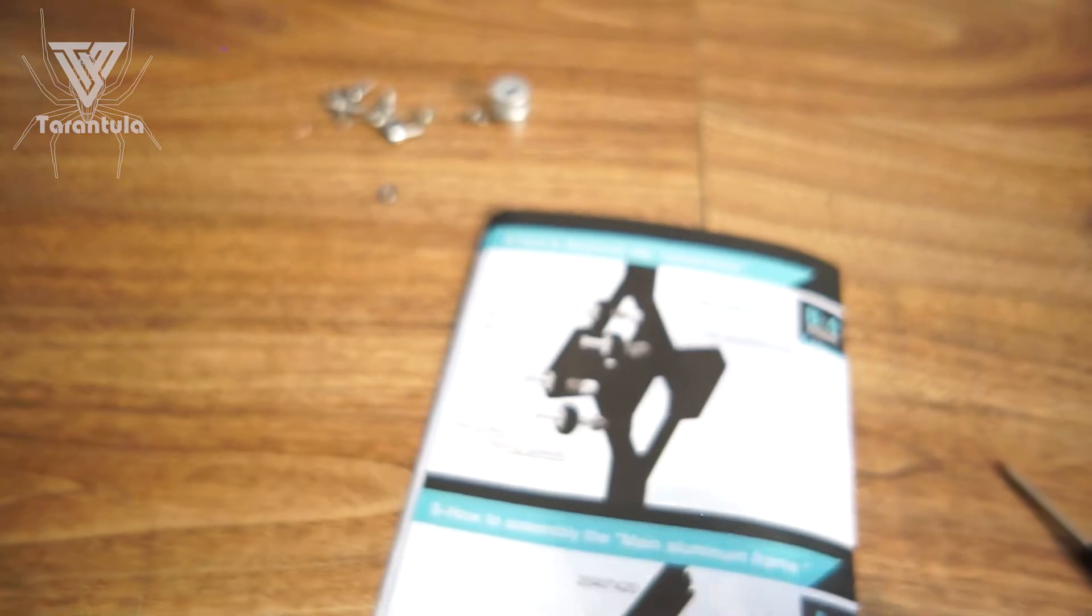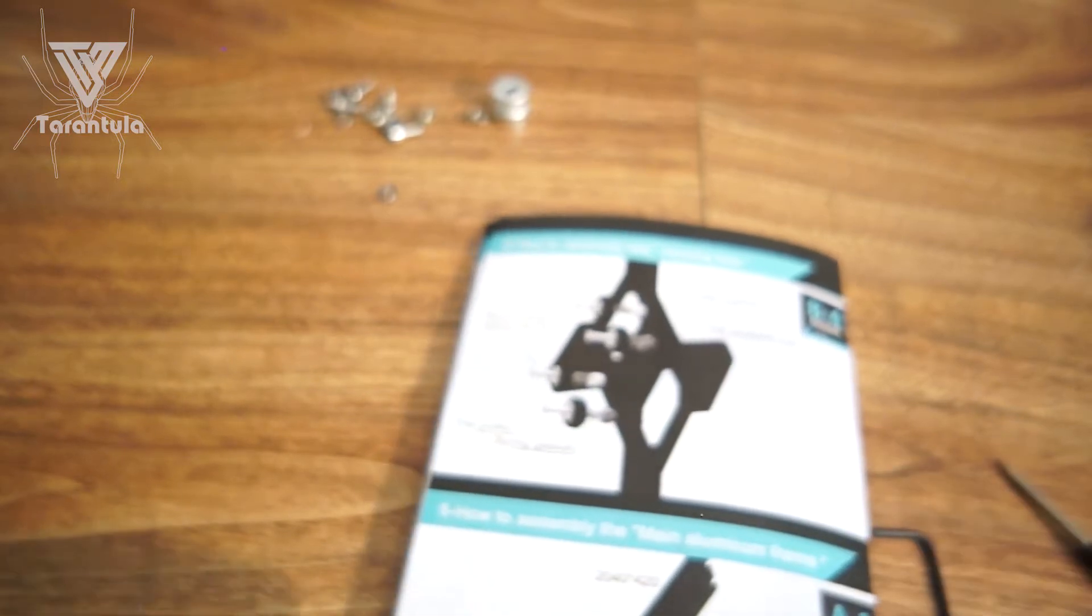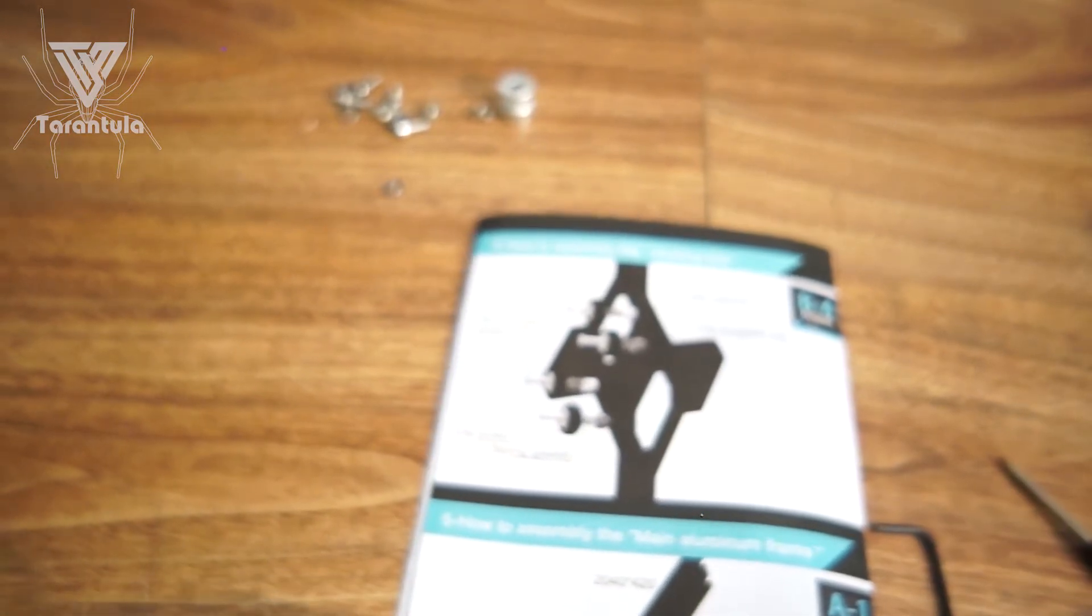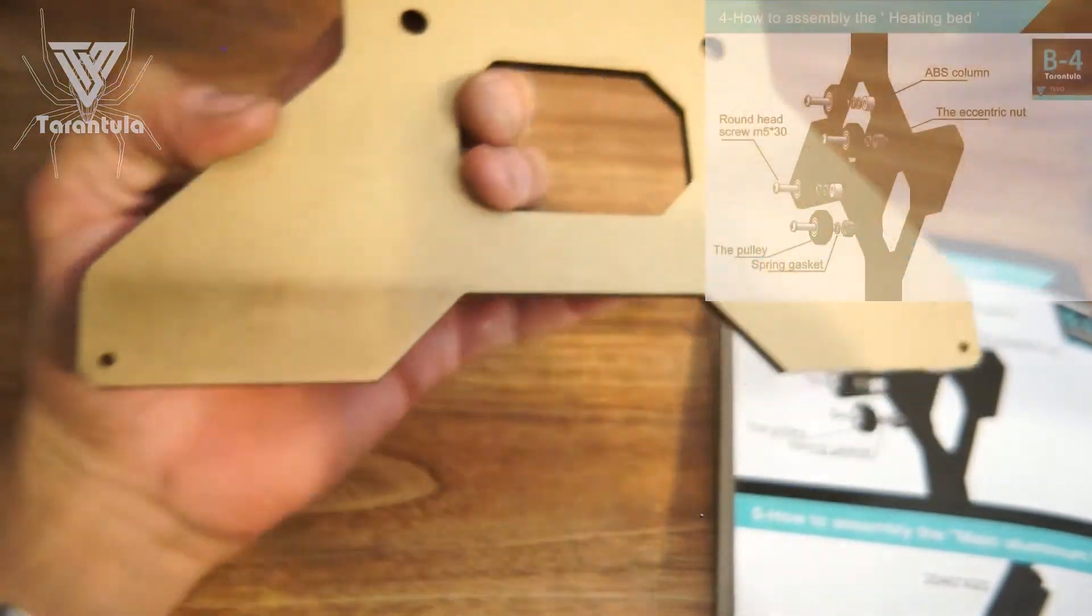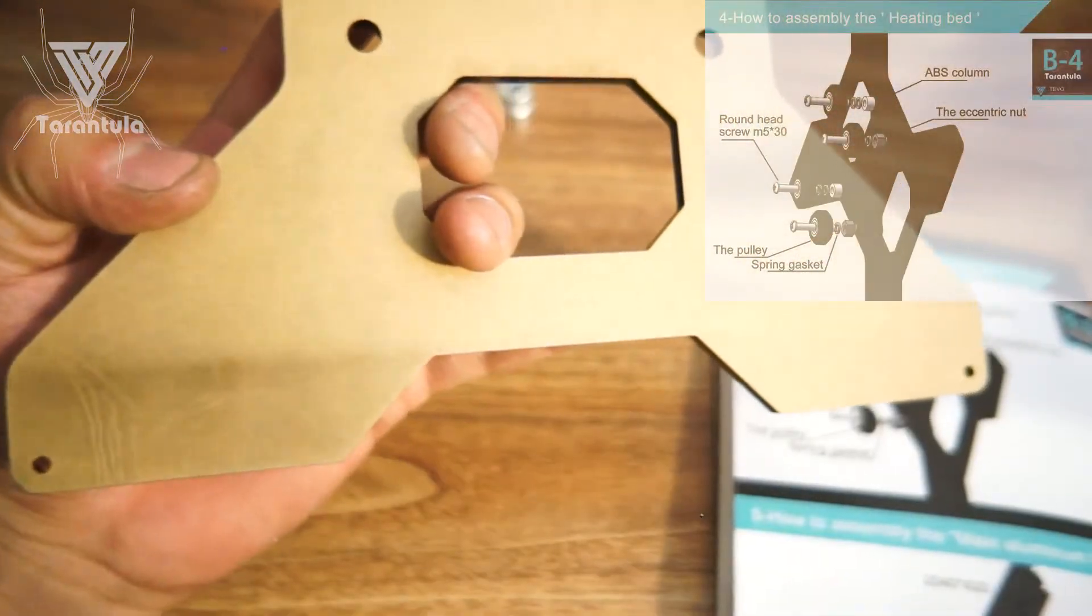Let's move on to step four. All right, so now we're going to get on to step four, which is how to assemble the heating bed. Let's go ahead and peel these things off here.